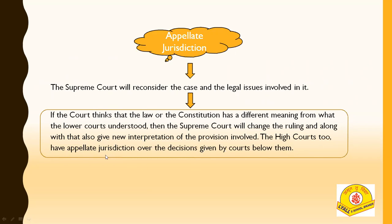High courts also have appellate jurisdiction over the decisions given by the courts below them — the subordinate courts. Just like the Supreme Court has appellate jurisdiction over the High Courts, the High Courts similarly have appellate jurisdiction over the lower courts below them.